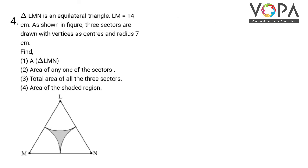Triangle LMN is an equilateral triangle where LMN is 14 cm. As shown in the figure, three sectors are drawn with vertices as centers and radius 7 cm. We have to find the area of triangle LMN, the area of any one of the sectors, the total area of all three sectors, and also the area of the shaded region.